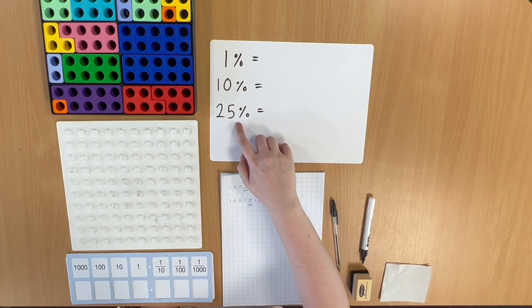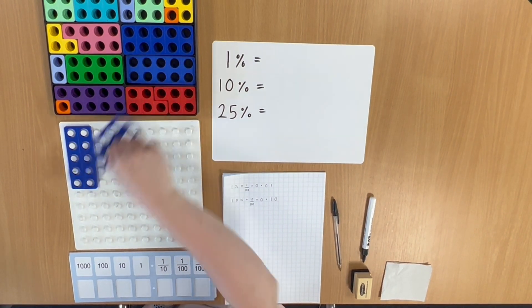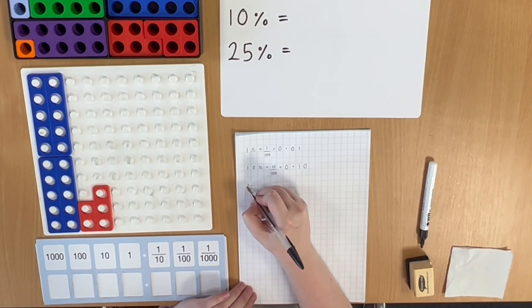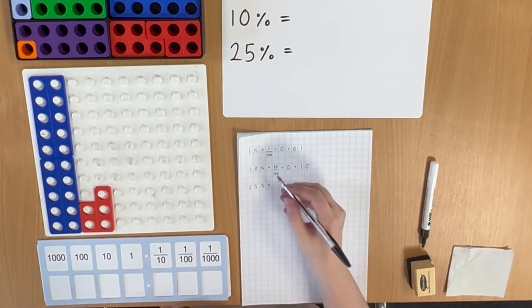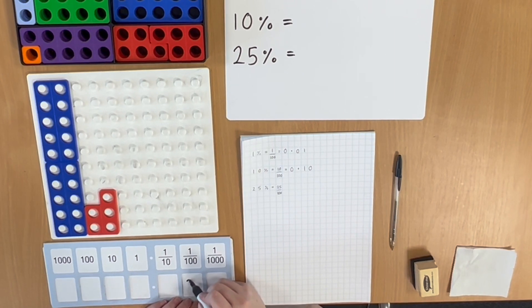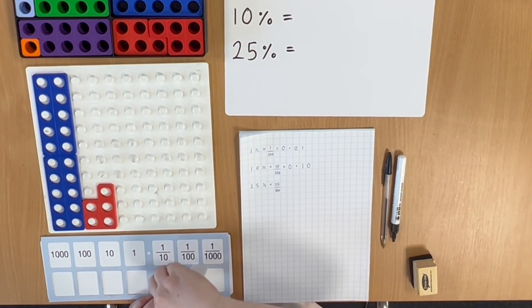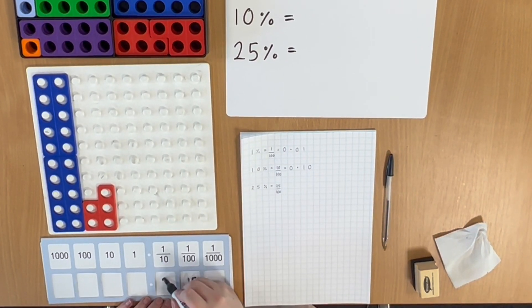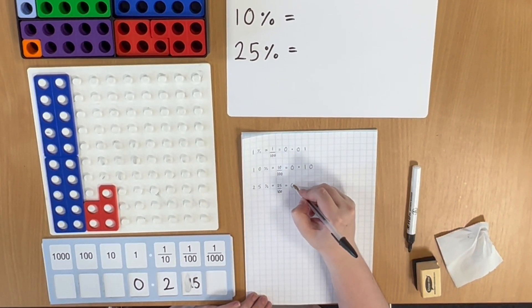Finally, let's repeat this for 25%. I've got to think of 25% as being 25 parts per 100. To write this as a fraction, I know that 25% is the same as 25 out of 100, so this is 25 hundredths. To write this as a decimal, I'm going to place 25 into the hundredths column. Since I'm not allowed two numbers in the place value column, I'm going to exchange the 2 and place this into the tenths column, and write 0 in the ones column as a placeholder. So 25% as a decimal is 0.25.